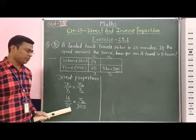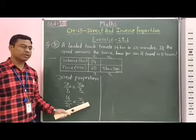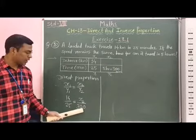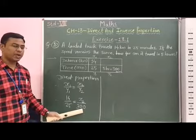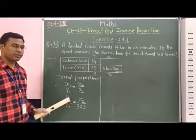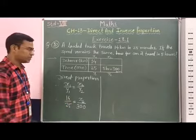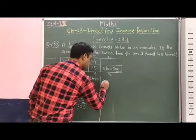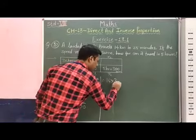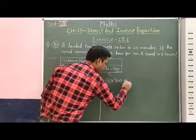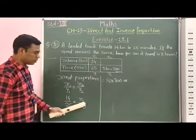Now, if we shift this 25 from LHS to RHS, it will multiply on RHS. And if we shift this 300 from RHS to LHS, it will multiply on LHS. Therefore, 14 into 300, which is equal to x2 into this 25.